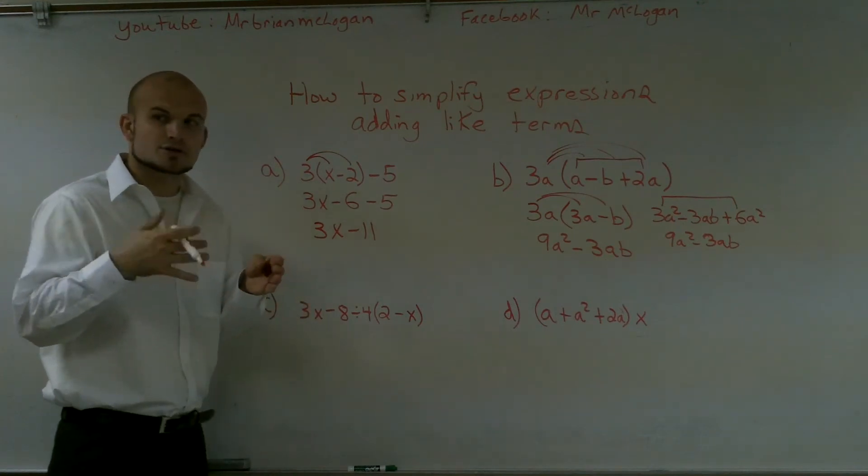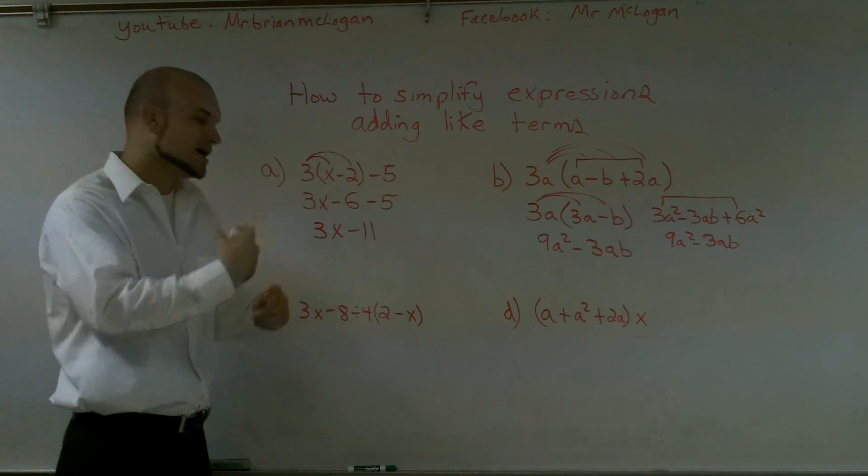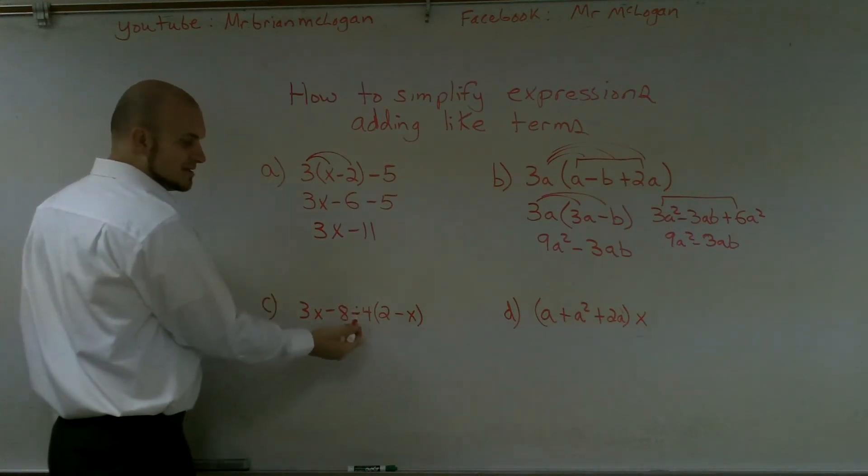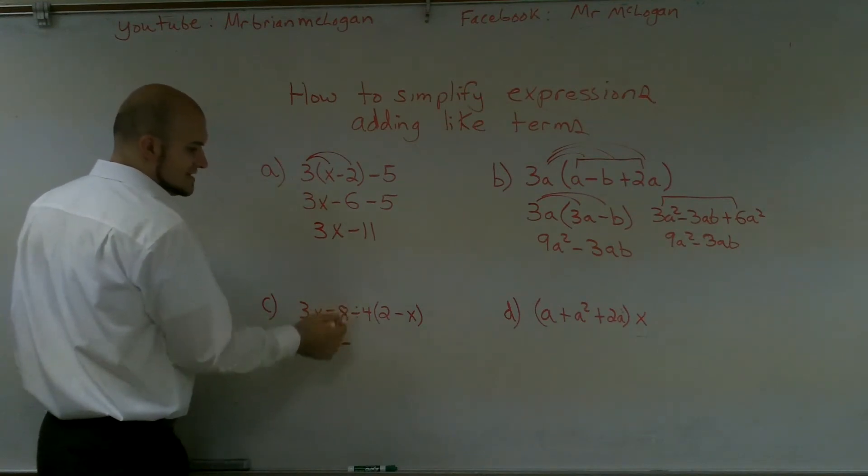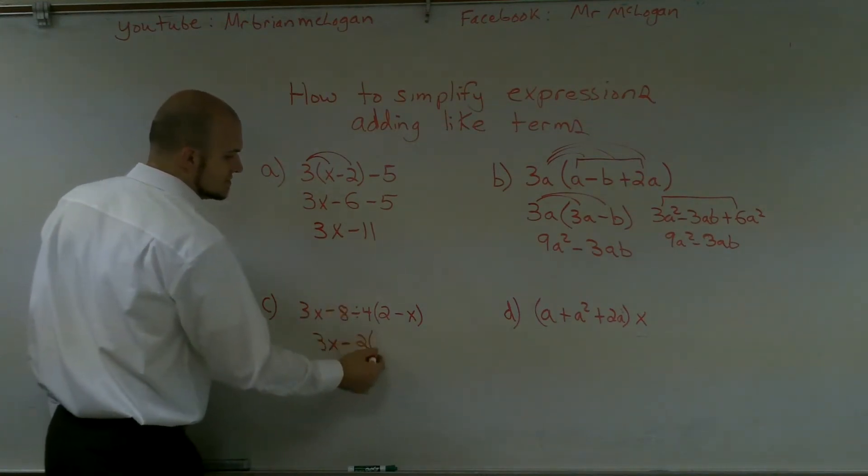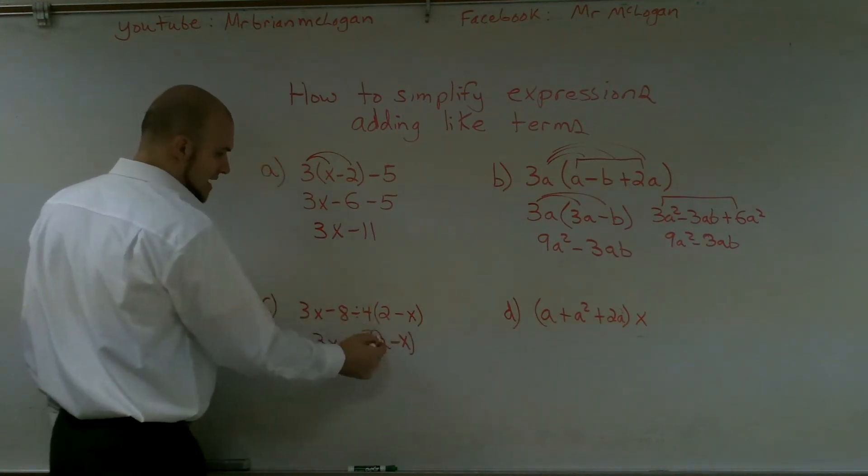we always need to do your parentheses, exponents, then multiplication, divide, always from left to right. So I'm going to do my left to right. So therefore I'm going to get 3x, I can't subtract yet. 8 divided by 4 is 2 times 2 minus x.